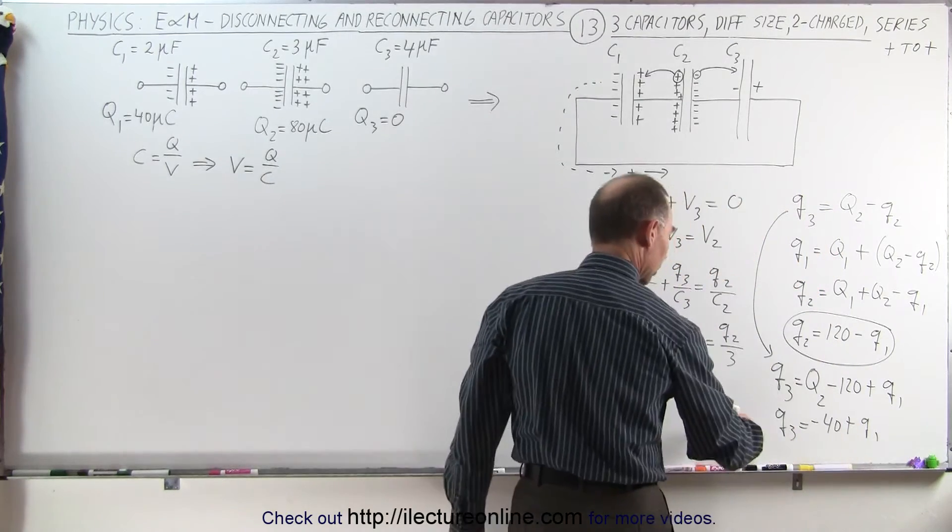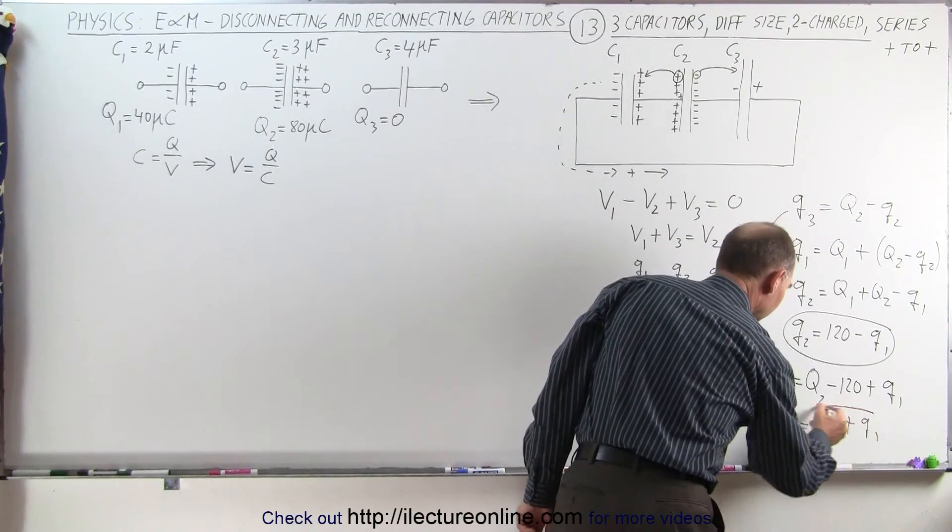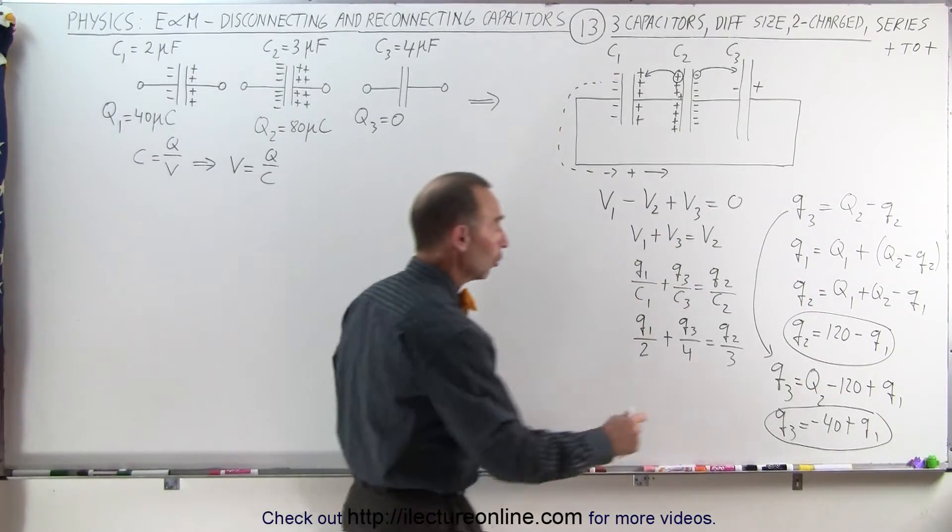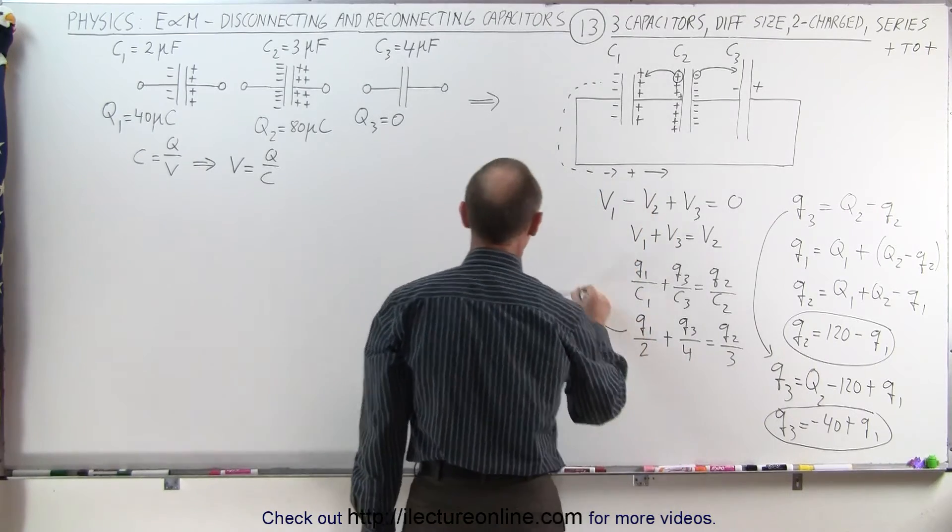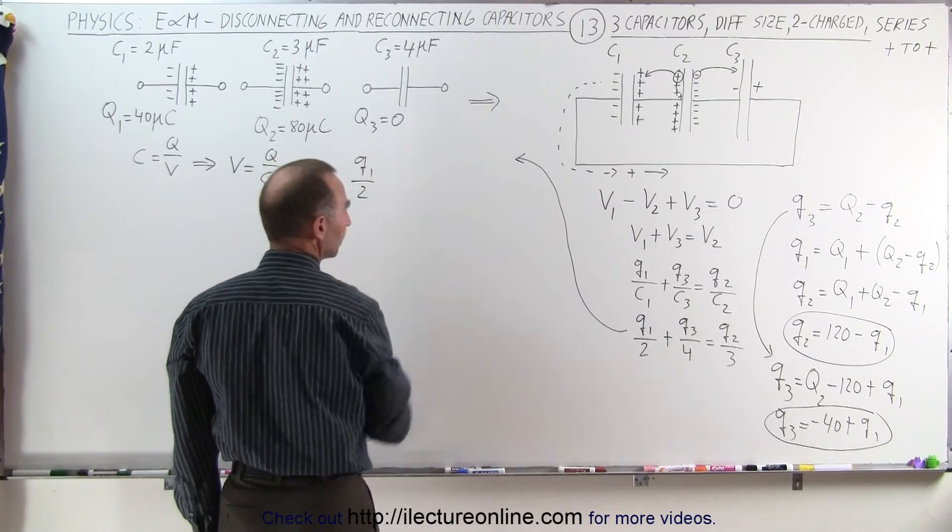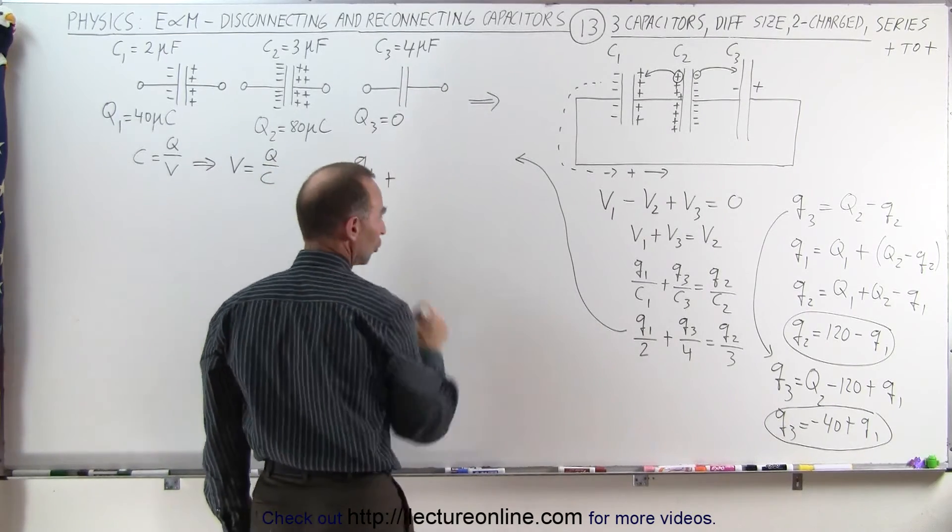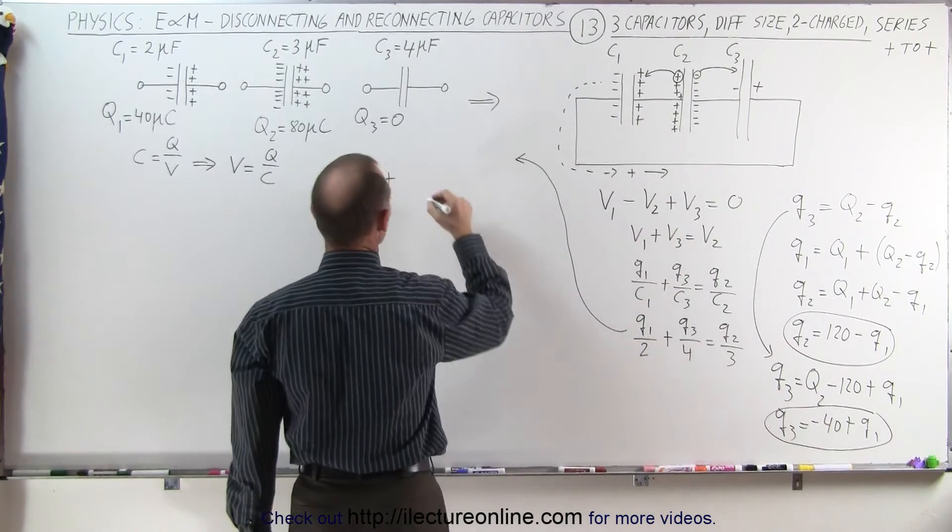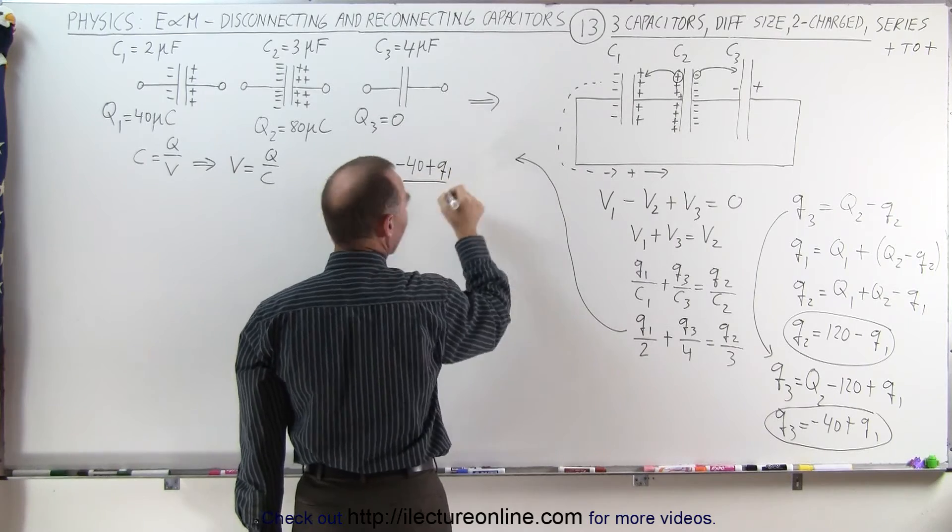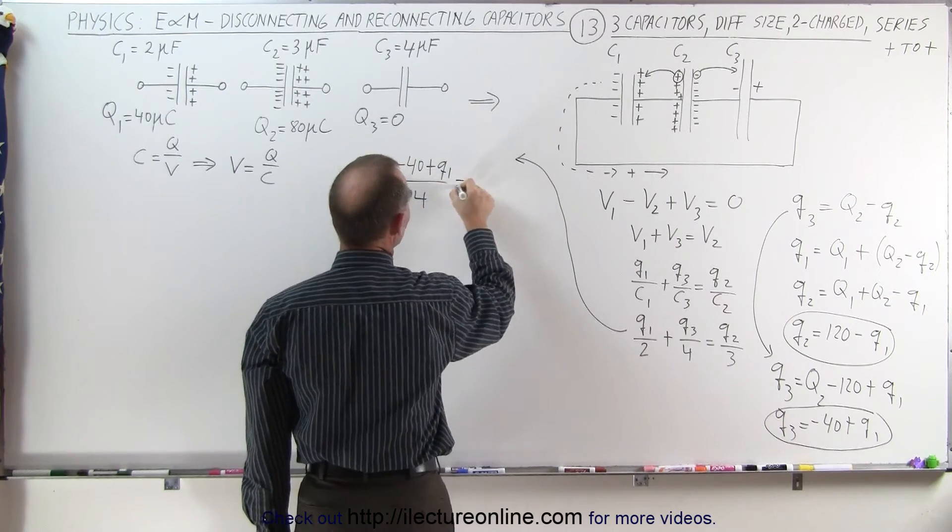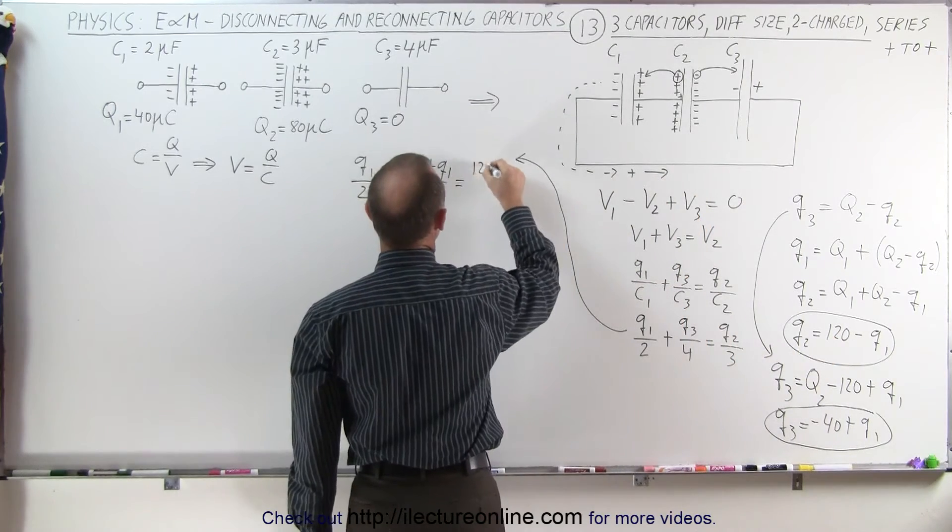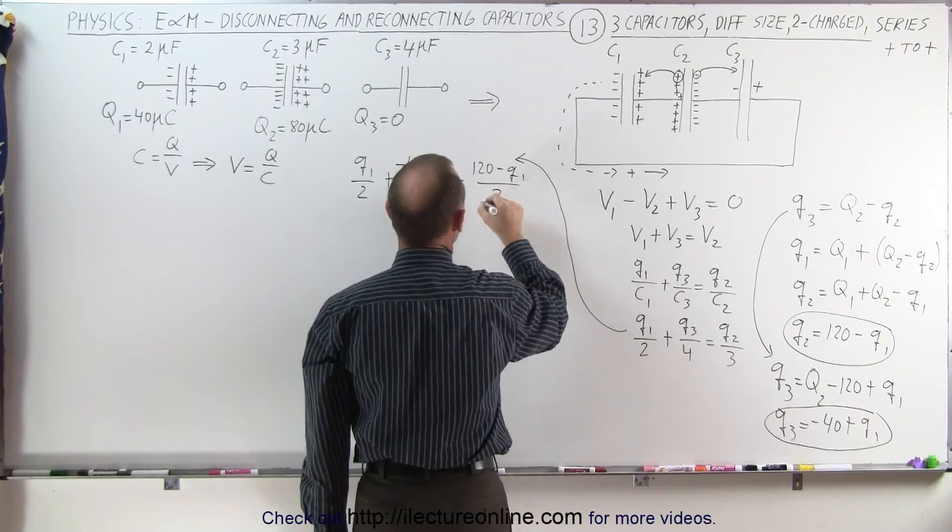Or solving this for, I don't have to. I already have Q3 in terms of Q1. So now I'm ready to substitute those two equations into this equation right here. Coming up here, we can write Q1 divided by 2 plus Q3. Q3 is minus 40 plus Q1, minus 40 plus Q1 divided by 4 is equal to Q2, which is 120 minus Q1, 120 minus Q1 divided by 3.